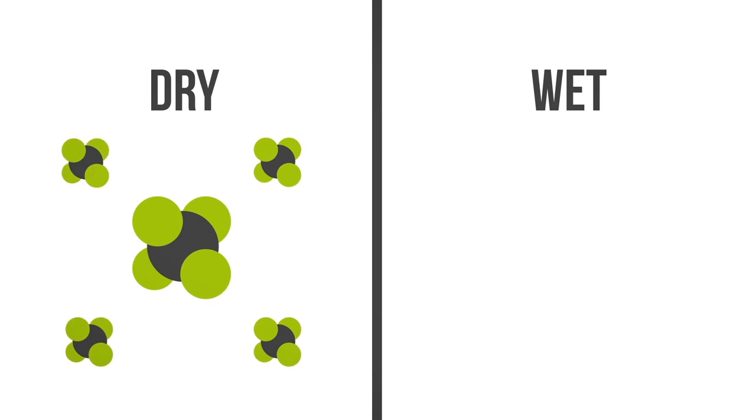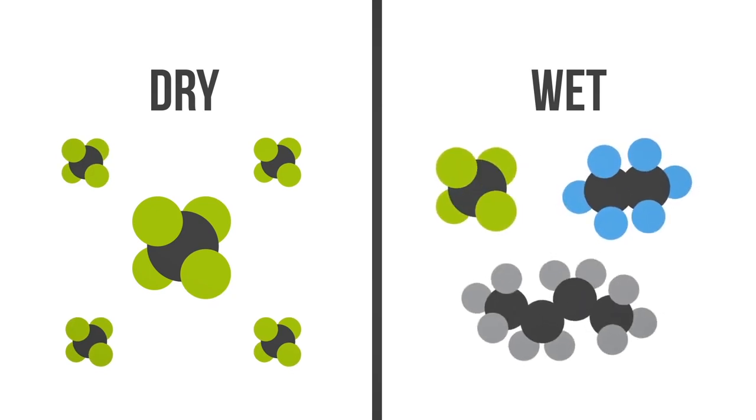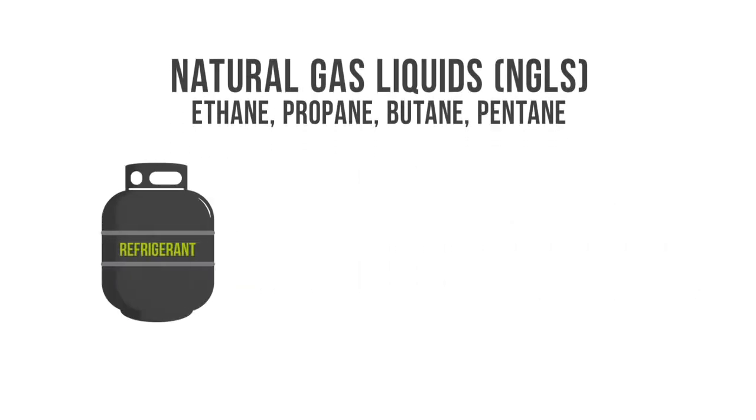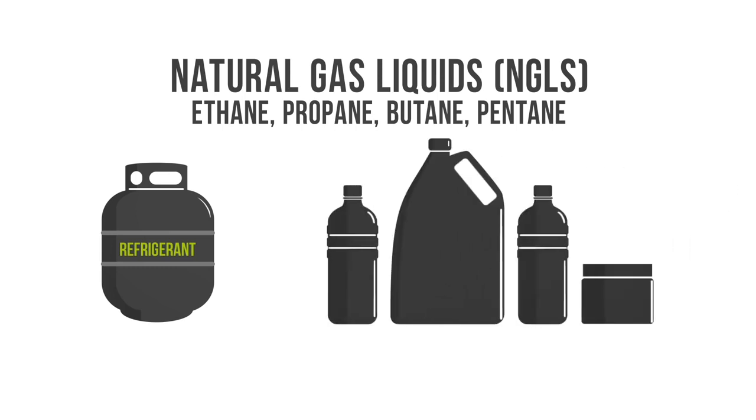Natural gas can be categorized as dry or wet. Dry gas is essentially gas that contains mostly methane. Wet gas, on the other hand, contains compounds such as ethane and butane, in addition to methane. These natural gas liquids, or NGLs for short, can be separated and sold individually for various uses, such as in refrigerants and to produce products like plastics.